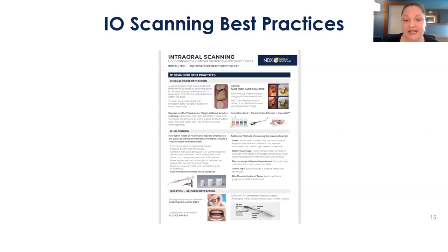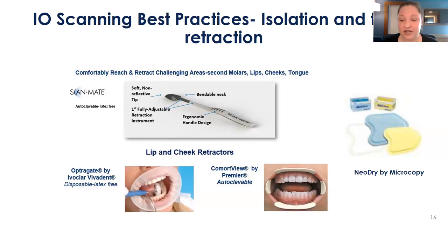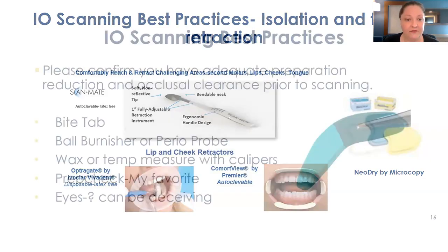This is one of the handouts you'll receive today. We're going to talk about overall scanning best practices. The items on screen are not required, but they can be very useful whether you're scanning with an assistant or scanning solo. We've got the ScanMate — instead of using a mirror that can reflect light, it's non-reflective and autoclavable, so it's great for retraction. The OptraGate is excellent for comfort, and a DryAid like the NeoDry can be helpful while scanning.